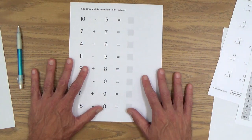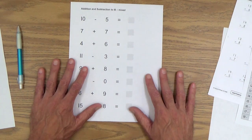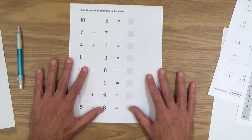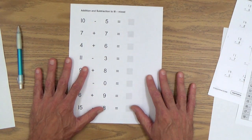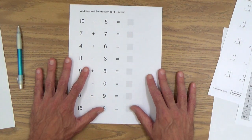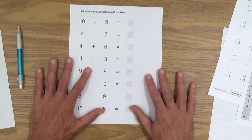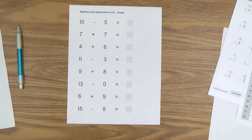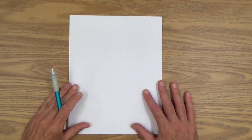So that's line subtraction to 18 and two different techniques you can use to solve those line subtraction equations.